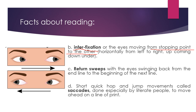We also have what we call return sweeps — the eyes swinging back from the end of a line to the beginning of the next line. The fourth movement is the short, quick hop-and-jump movements called saccades. This is only done by literate people to move ahead on the line of print — for example, when scanning for information, quickly hopping or jumping from one part of the text to another.